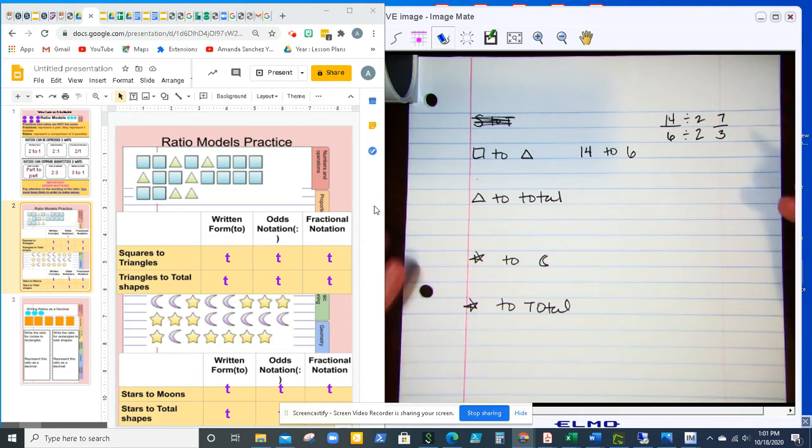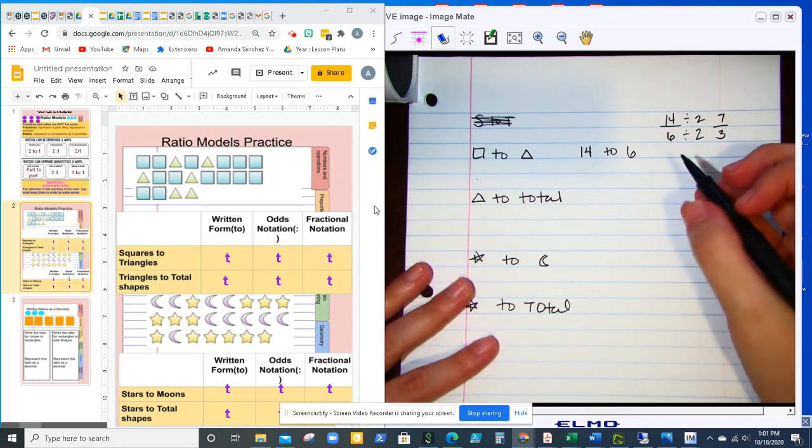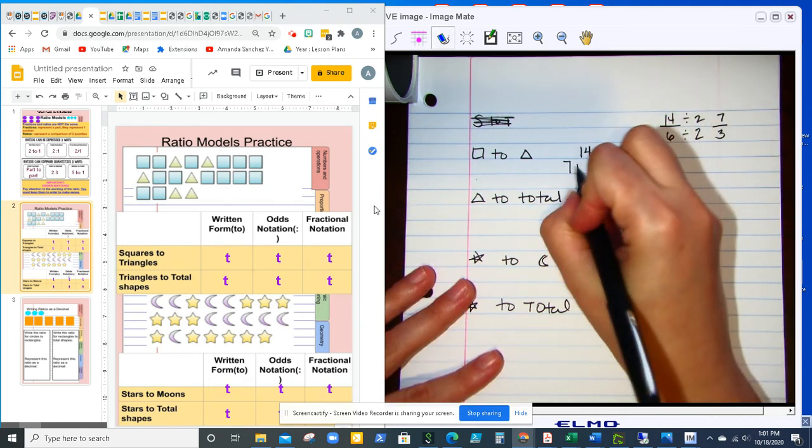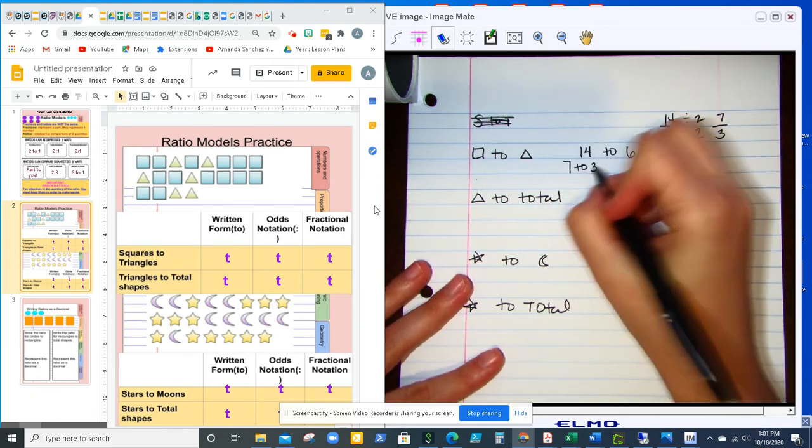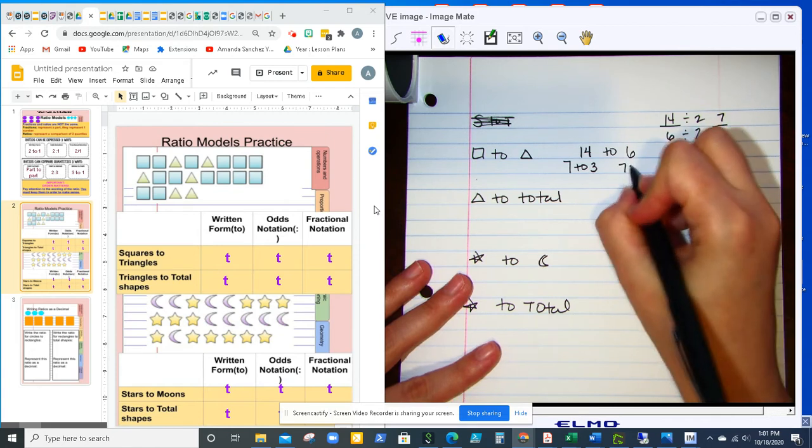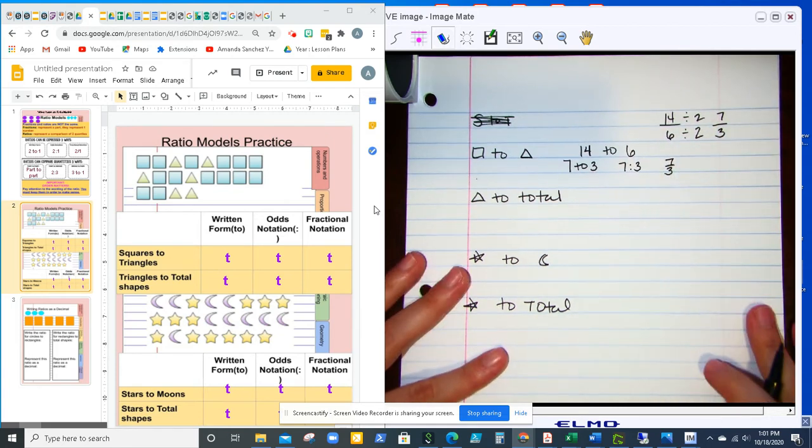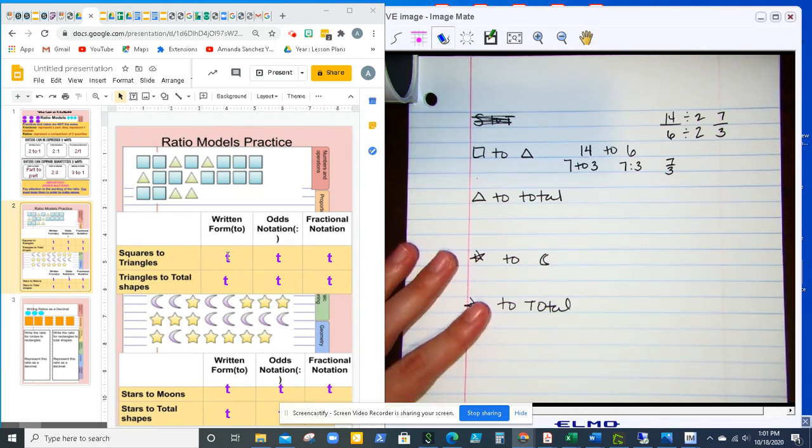So then my written form would be 7 to 3, and then my ratio notation 7 colon 3, and then my fraction 7 over 3. So that's for the first one, that's what you would have right here.